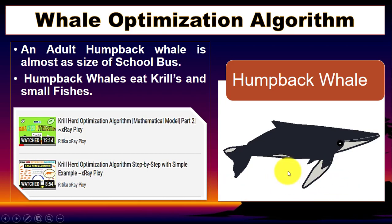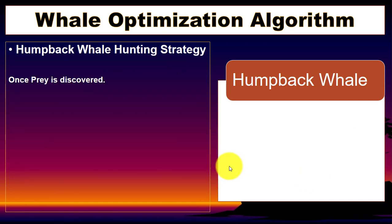This is the humpback whale. An adult humpback whale is almost the size of a school bus. They eat krill and small fish. Krill are small individuals that live in the deep ocean. Now we will learn the hunting strategy used by the humpback whale, as this algorithm is inspired by that hunting behavior.